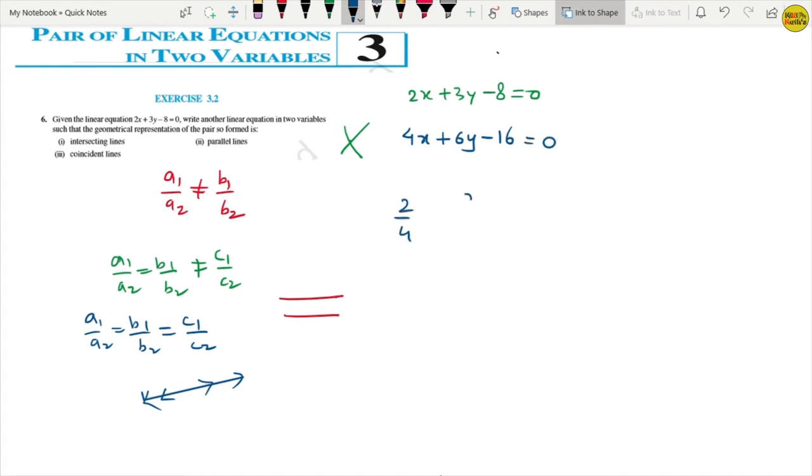So what happens if 2 by 4, 3 by 6, minus 8 by minus 16? So 2 divided by 4, that is 1 by 2. 3 divided by 6, that is also 1 by 2 equal. Minus 1 gets cancelled, 8 divided by 16, this is also equal to 1 by 2. So this is satisfying our equation, which means this is our coincident line.